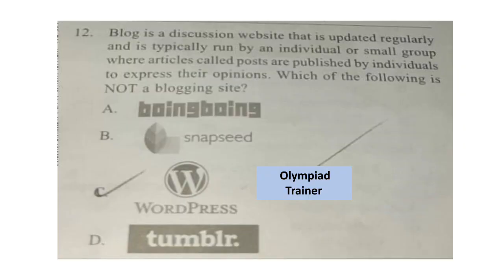Question 12: A blog is a discussion website that is updated regularly and is typically run by an individual or small group, where articles called posts are published by individuals to express their opinions. Which of the following is not a blogging site? The correct answer is option B — Snapseed. It is a photo editor app.